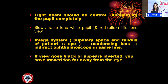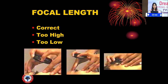The light beam should be central, illuminating the pupil completely. Slowly raise the lens while the pupil and red reflex fill the lens view. Gullstrand's principle: the pupillary space, the fundus, the condensing lens, and the indirect ophthalmoscope all have to be in the same line. If the view goes black or appears inverted, you have moved too far away from the eye — that is the focal length issue. The correct position is with the lens properly placed; too high up or too close to the face are incorrect positions.